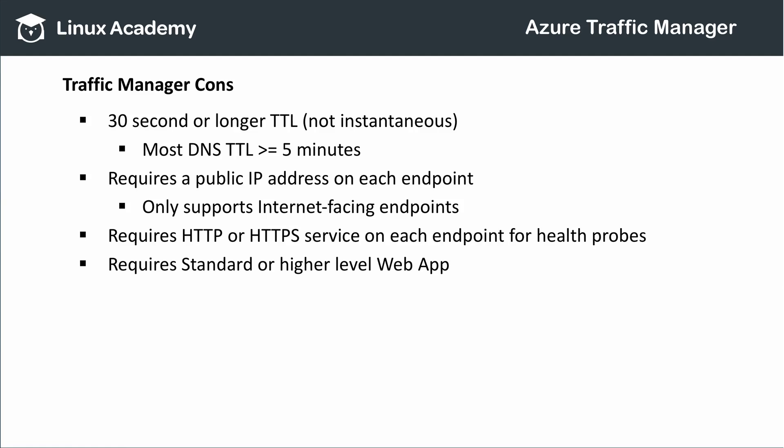You can only use Traffic Manager for public IP addresses and internet-facing endpoints — so you can't, for example, link up an on-premises solution if it isn't open to the world. To conduct its health probes, Traffic Manager needs each endpoint to respond to an HTTP or HTTPS GET request with a 200 status code. Any non-response or non-200 response takes the endpoint offline and affects how Traffic Manager routes requests.